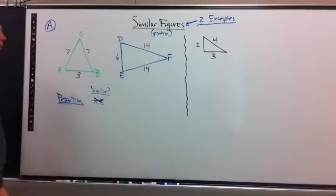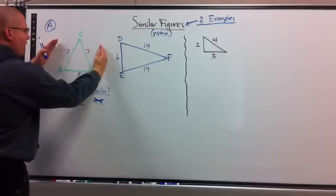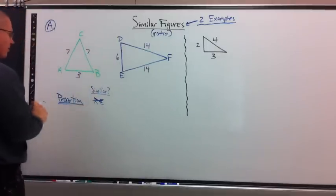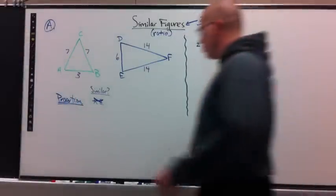How would I write a proportion to prove this? Well, I need a ratio from this triangle. I need a ratio, something. You could do 7 equals 7 to 7.